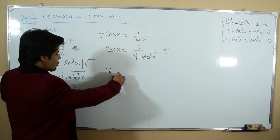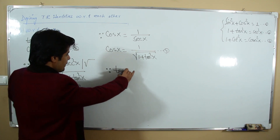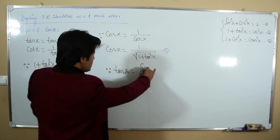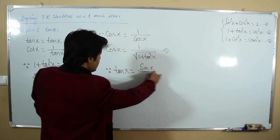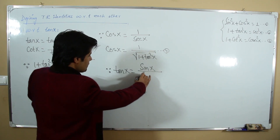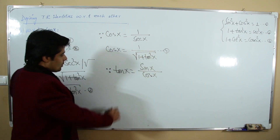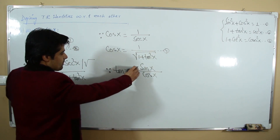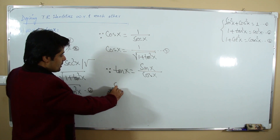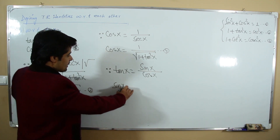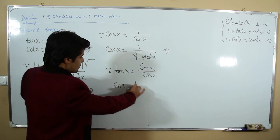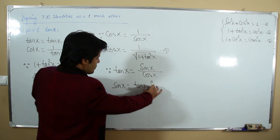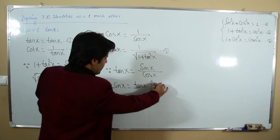From the definition tan x = sin x / cos x, by cross-multiplication: sin x = tan x · cos x.